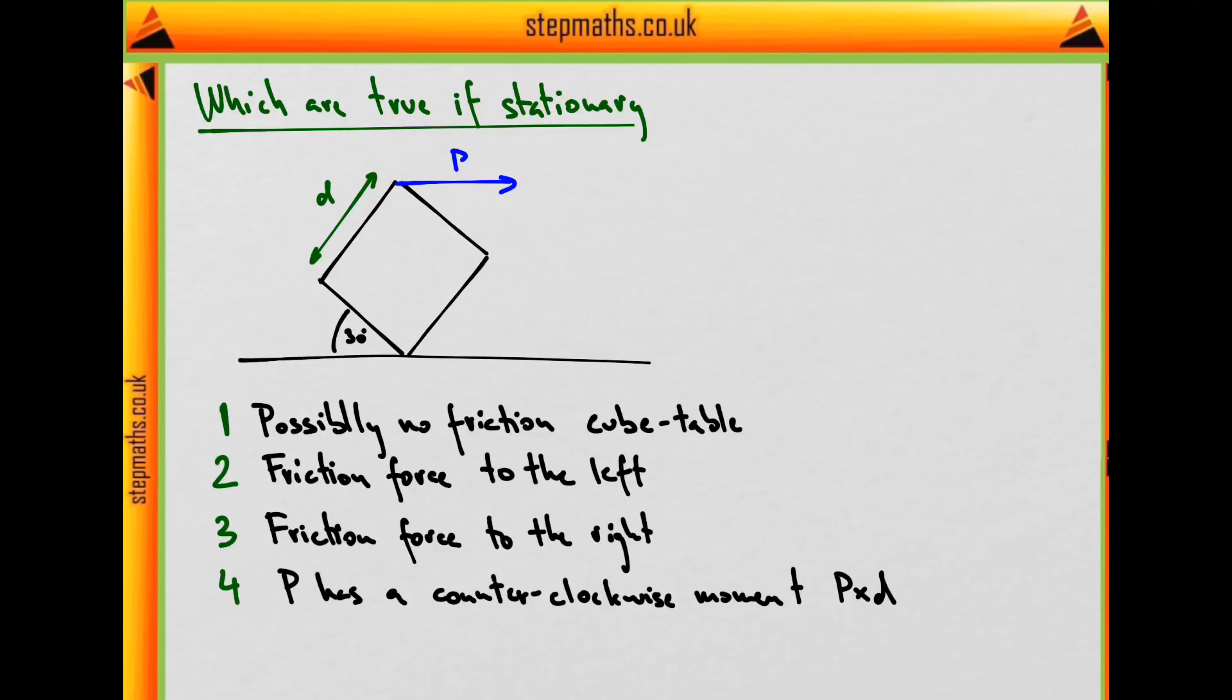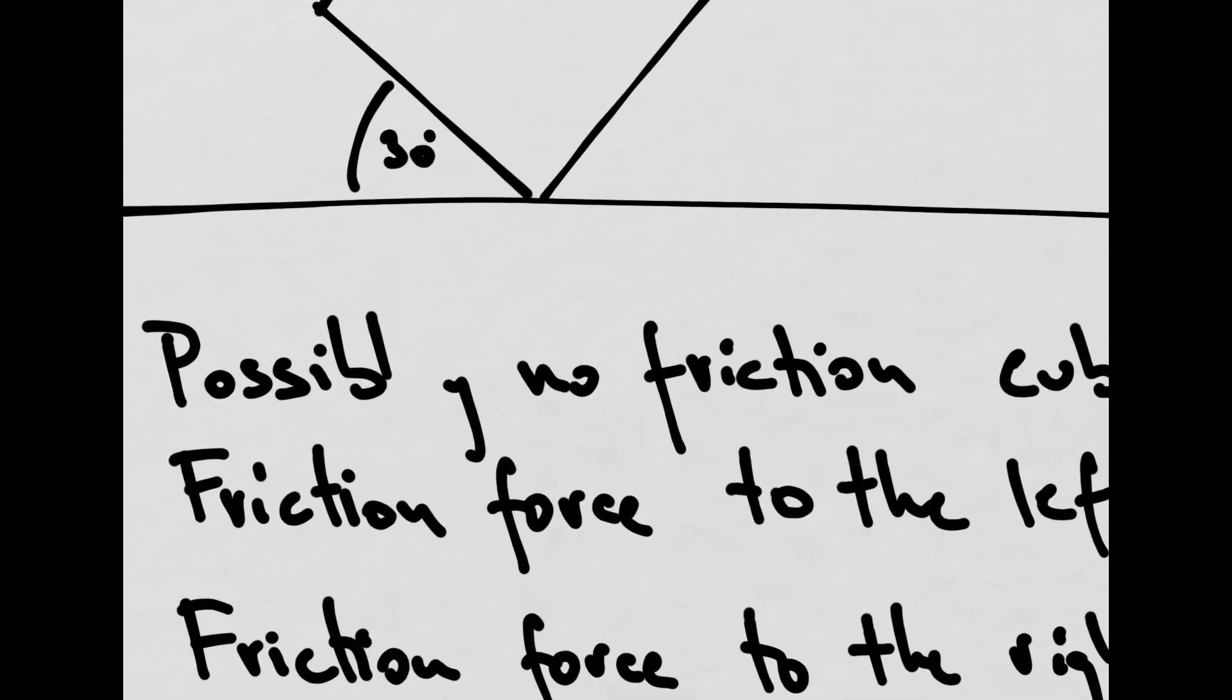We are supposed to decide which of the following four statements will be true. So the first three say that there is possibly no friction between the cube and the table, with one more that would be necessary.